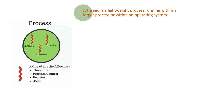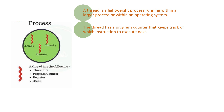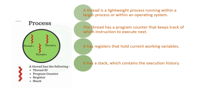Now we can see what a thread has. A process can have a number of threads, and each thread has the following: a thread ID, program counter, registers, and stack. A thread is a lightweight process running within a larger process or operating system. The program counter keeps track of which instruction to execute next, registers hold current working variables, and the stack contains the execution history.